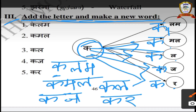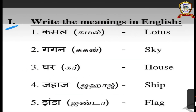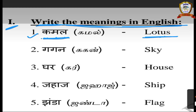Let us now revise the previous class Roman 1: Write the meanings in English. This is the second day class material reading, I am going over it once again. First one: Kamal — K-A-M-A-L. Kamal means lotus — L-O-T-U-S, lotus. Second one: Gagan means sky — S-K-Y, sky.